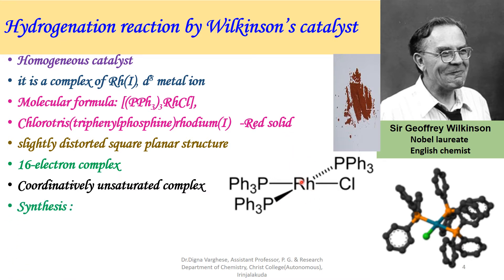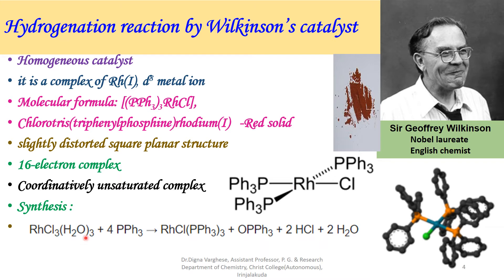Synthesis of the Wilkinson catalyst: Here you can see the rhodium salt reacts with triphenylphosphine forming the Wilkinson catalyst. Rhodium chloride reacts with triphenylphosphine, and the by-products are triphenylphosphine oxide, hydrochloric acid, and water. So, Wilkinson catalyst is chlorotris(triphenylphosphine)rhodium(I) complex.